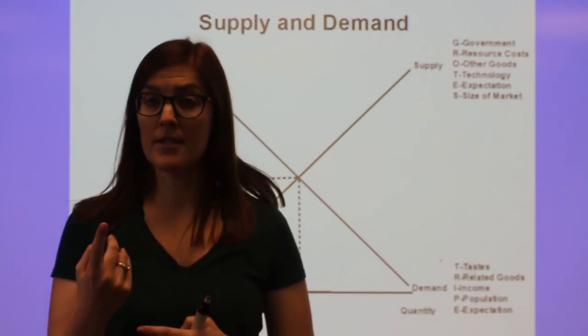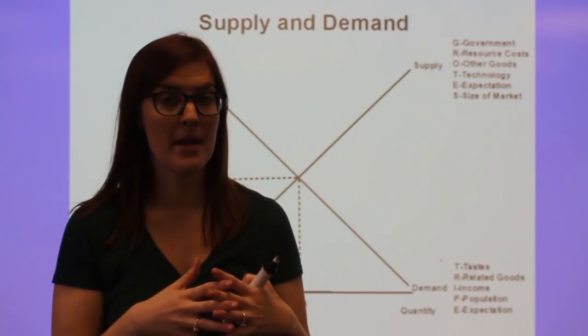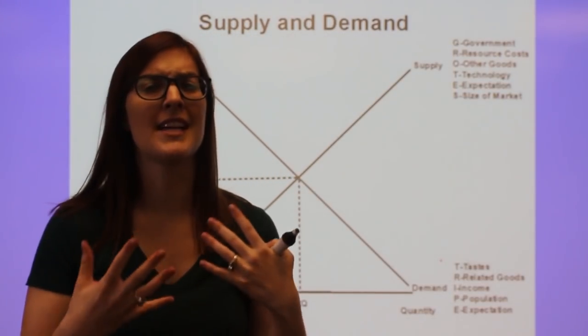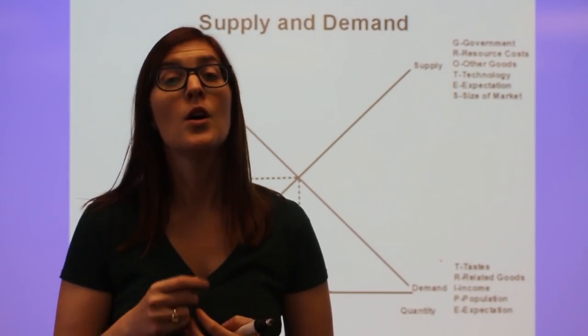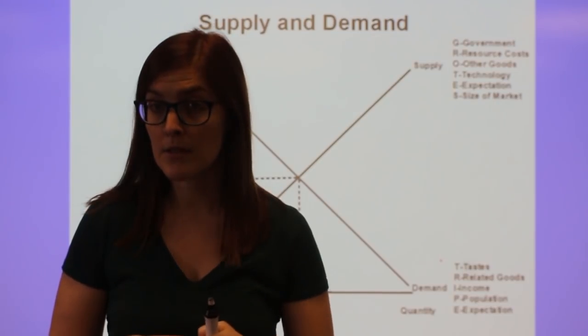In groats we have government, which in regular supply and demand, government moves the supply line first. So anything with taxes, regulations, subsidies, which is when the government gives the producer money.